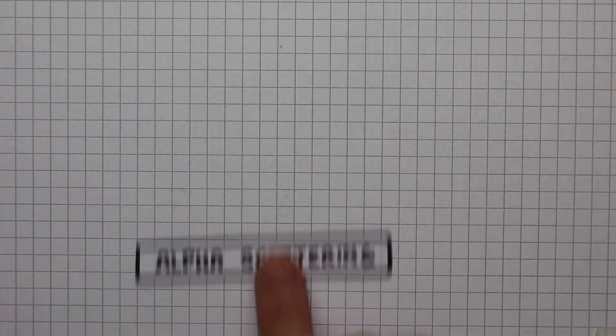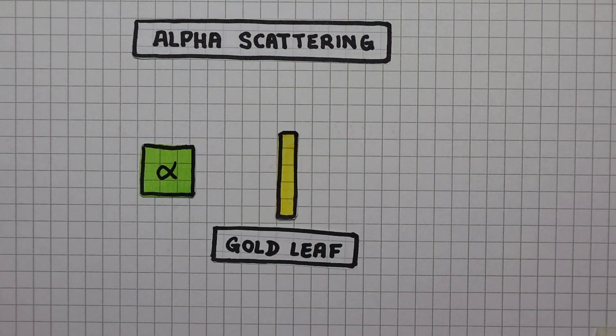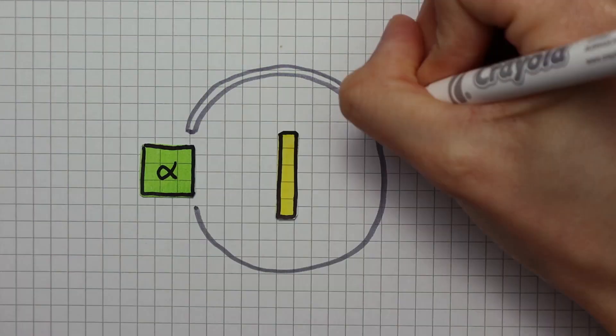Rutherford carried out what's called the alpha scattering experiment. He used a piece of gold leaf, an alpha emitting source, and a circular fluorescent screen.